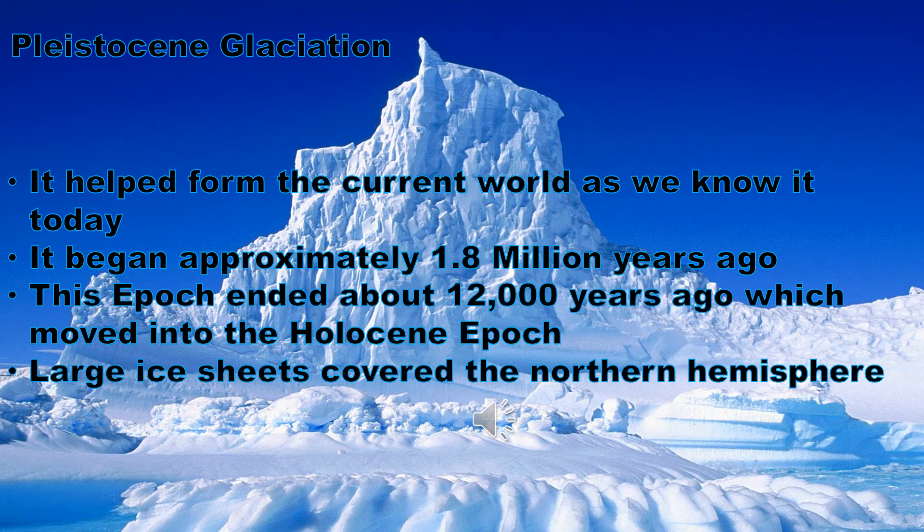This epoch ended about 12,000 years ago, which moved into the Holocene epoch. Large ice sheets covered the northern hemisphere, and some of these large ice sheets were as thick as 2.5 miles deep. Throughout the Pleistocene glaciation, during the cooler and warmer periods, the ice formed and retreated more than 20 times.